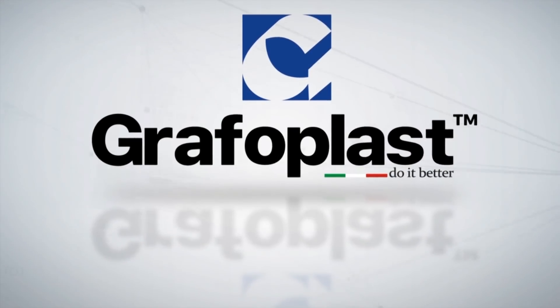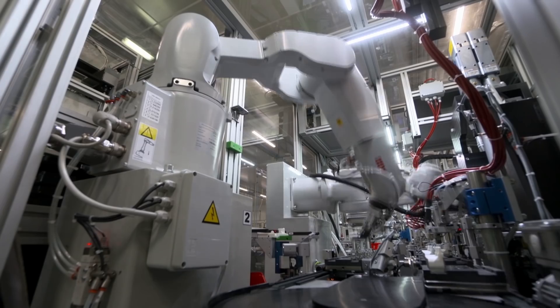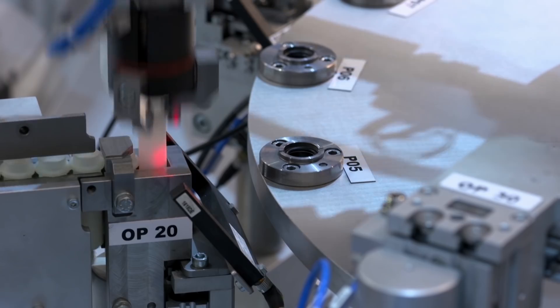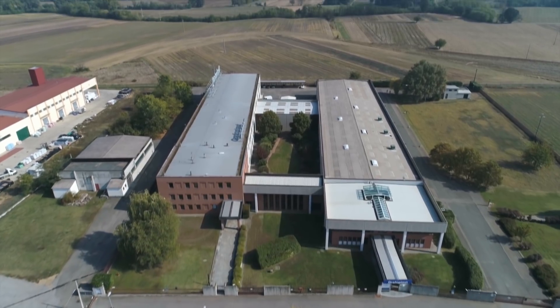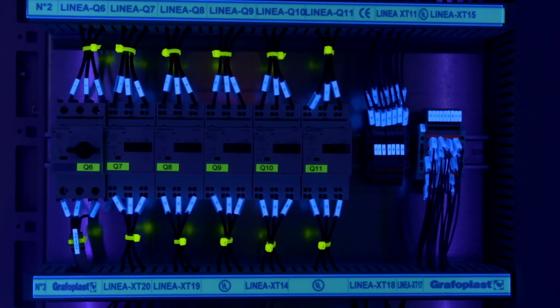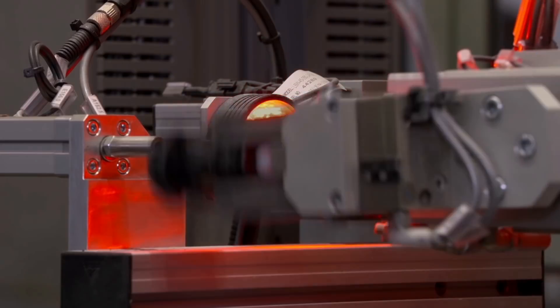Graphoplast is recognized as a specialist in identification for the electrical engineering and industrial automated market. Talking about Graphoplast means thinking of a clear marking which is resistant over time, on a cable, in an electric panel, along a production line.